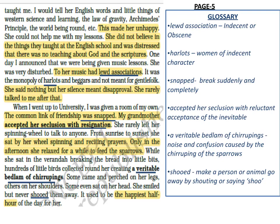When the author went to university and had a room of his own, their common link was broken and his friendship with her effectively ended. The grandmother became isolated and rarely left her spinning wheel to talk to anyone, continuing to recite prayers while spinning. In the afternoons, she fed sparrows in the veranda — birds gathered around her, some sitting near her, some on her legs, some on her shoulders, and a few on her head. This 'veritable bedlam of chirpings' never bothered her. She was happiest during that half hour of the whole day.